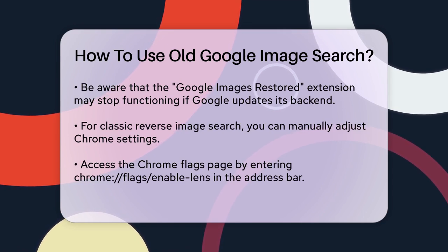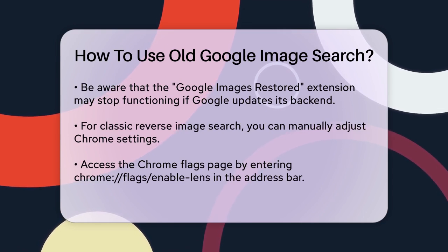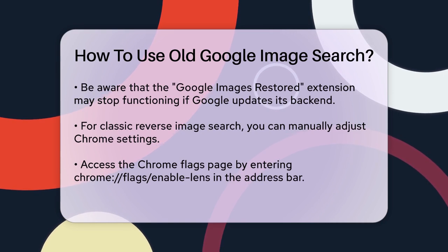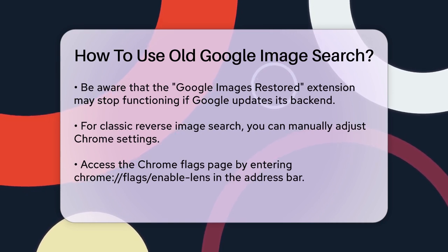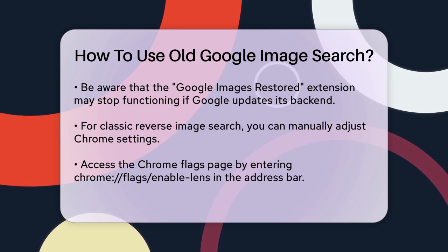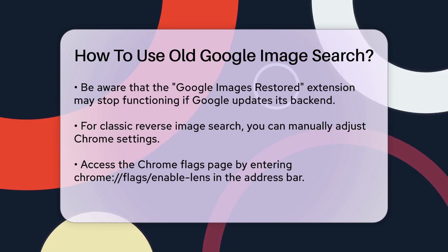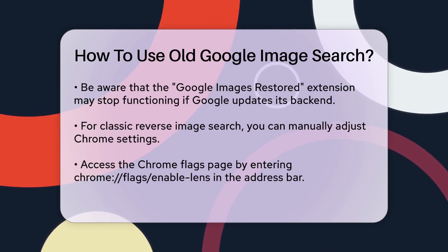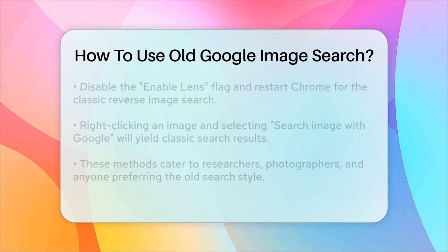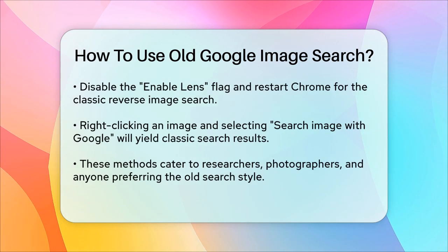To use the classic reverse image search, you can also tweak Chrome's settings manually. Open Google Chrome, copy the URL chrome-flag-enable-lens, and paste it into the address bar. This will take you to the Chrome Flags page where you can disable the Google Lens feature. Find the Enable Lens flag and set it to Disabled. Restart Chrome, and you'll be able to use the classic reverse image search again.